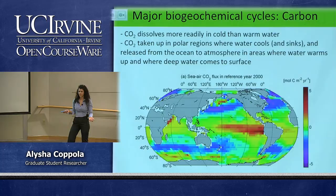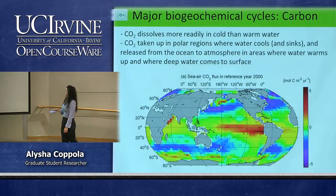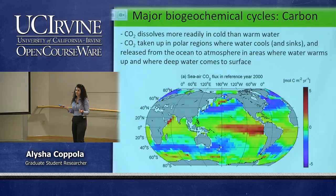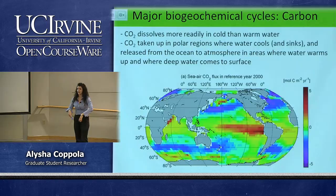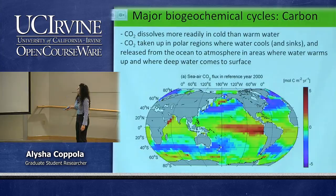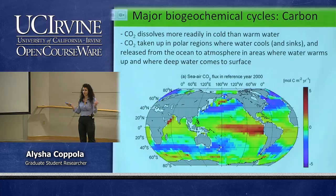CO₂ dissolves more readily in colder waters. The air-sea CO₂ flux map shows in blue-purple colors where the ocean is drawing in a lot of CO₂ from the atmosphere — occurring in colder areas — and in red where CO₂ is being released from the ocean in warmer temperatures. With warmer temperatures, we may not be able to sequester or draw in as much CO₂ from the atmosphere. This uptake accounts for about 20% of the CO₂ in the atmosphere.